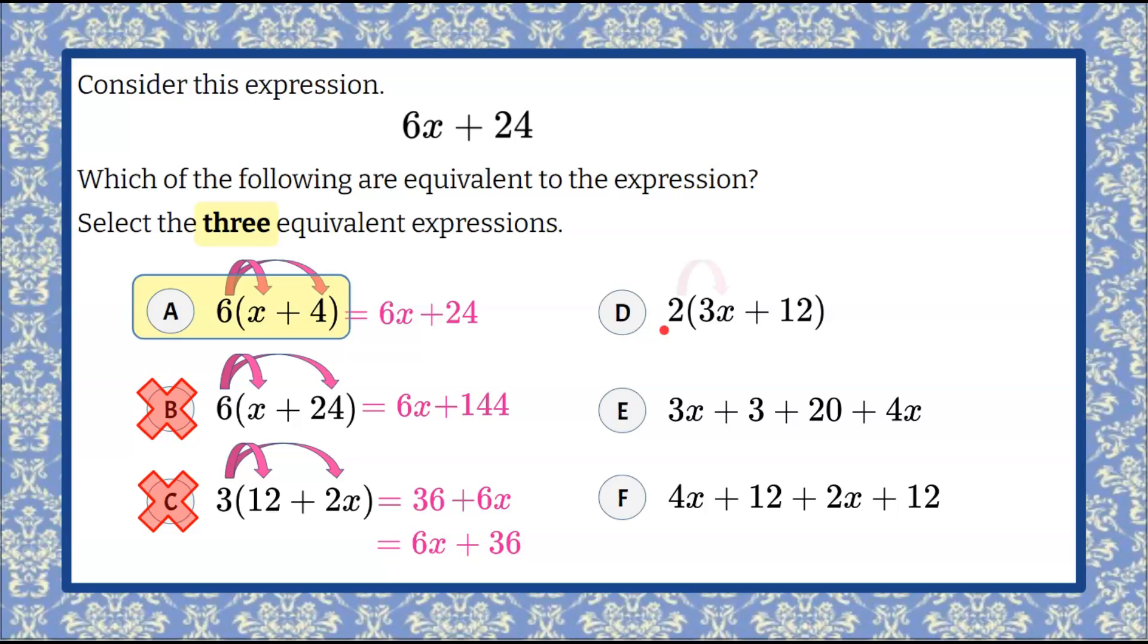Moving on to D. Let's distribute the 2. 2 multiplied by 3x is 6x. 2 multiplied by 12 is 24. We have our second equivalent expression. So answers A and D are equivalent.